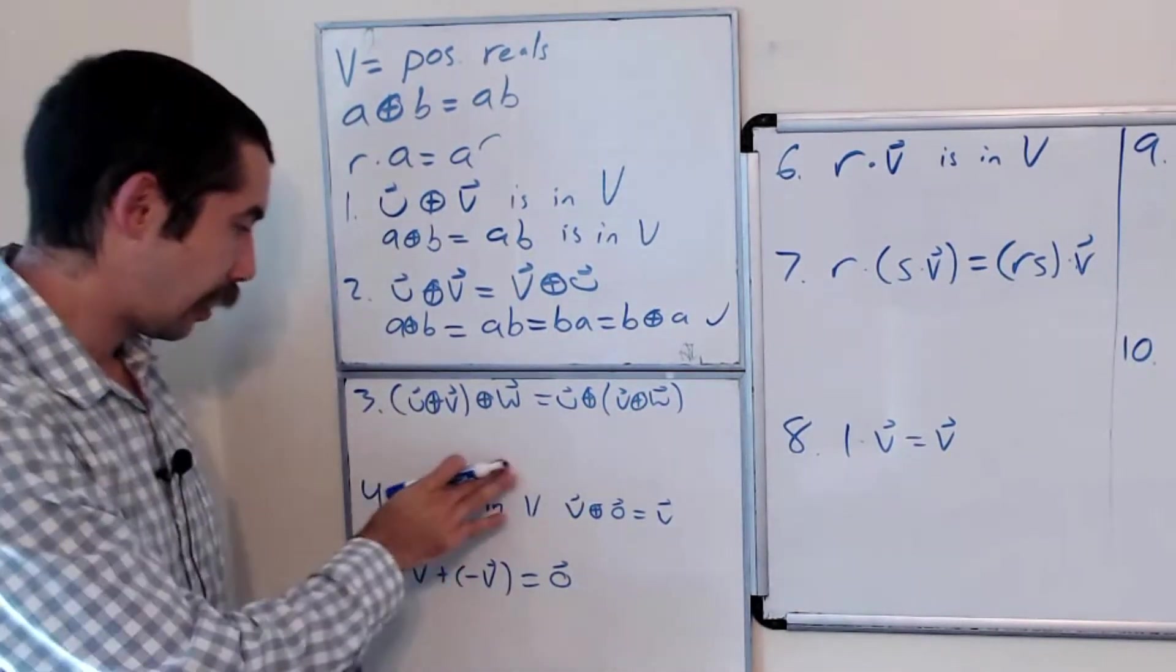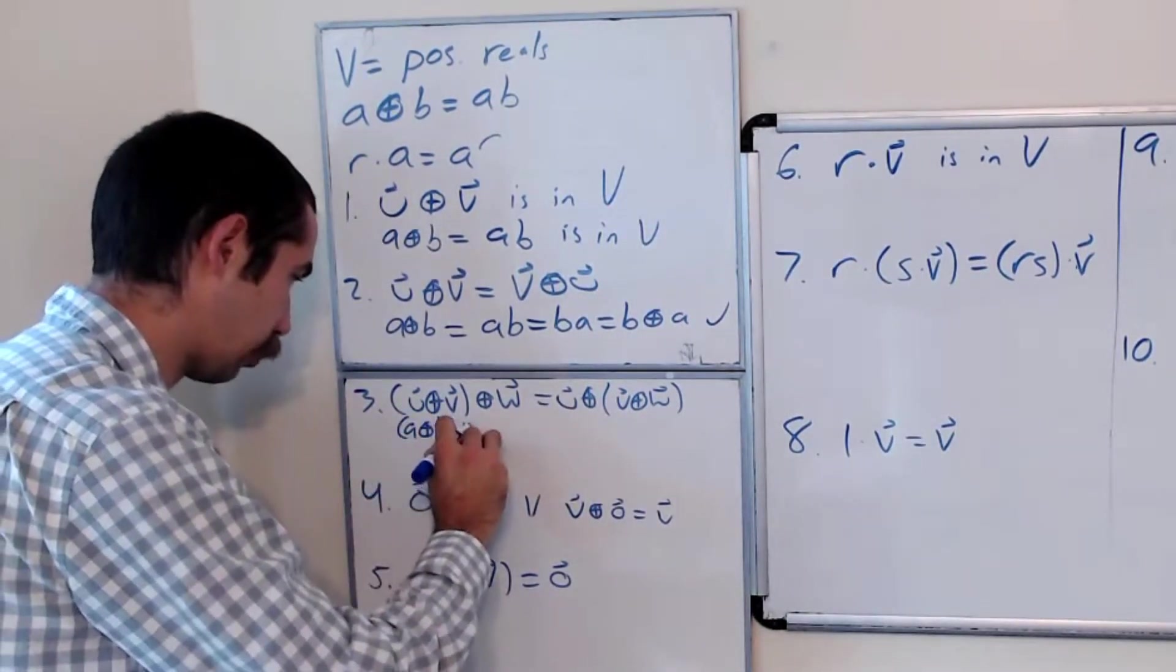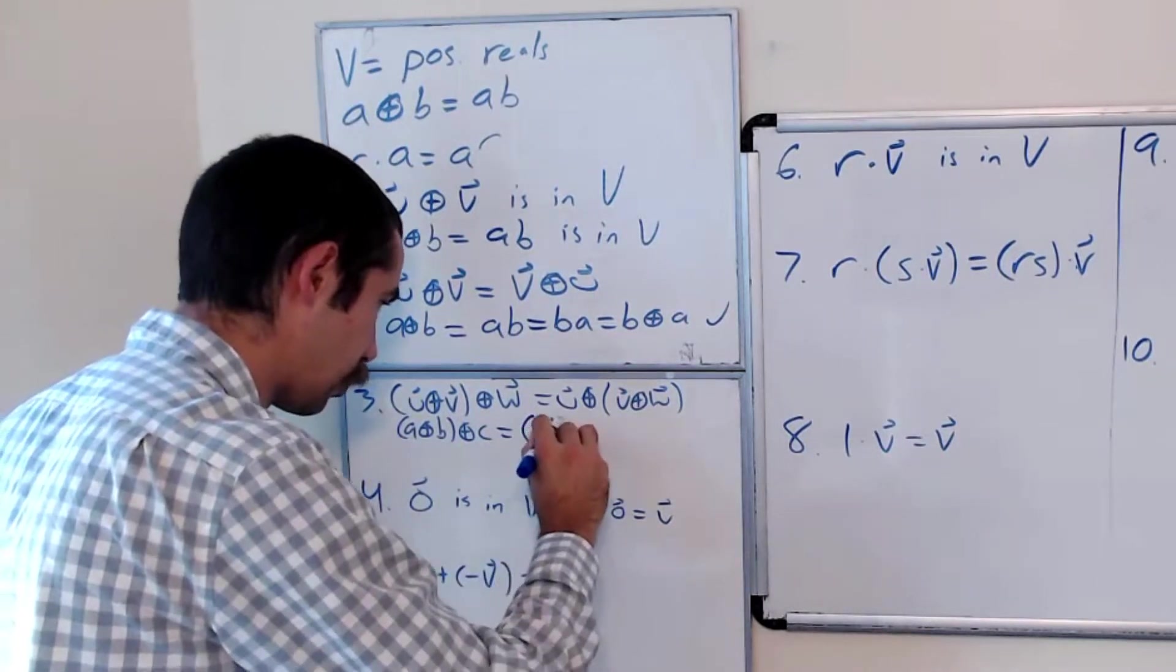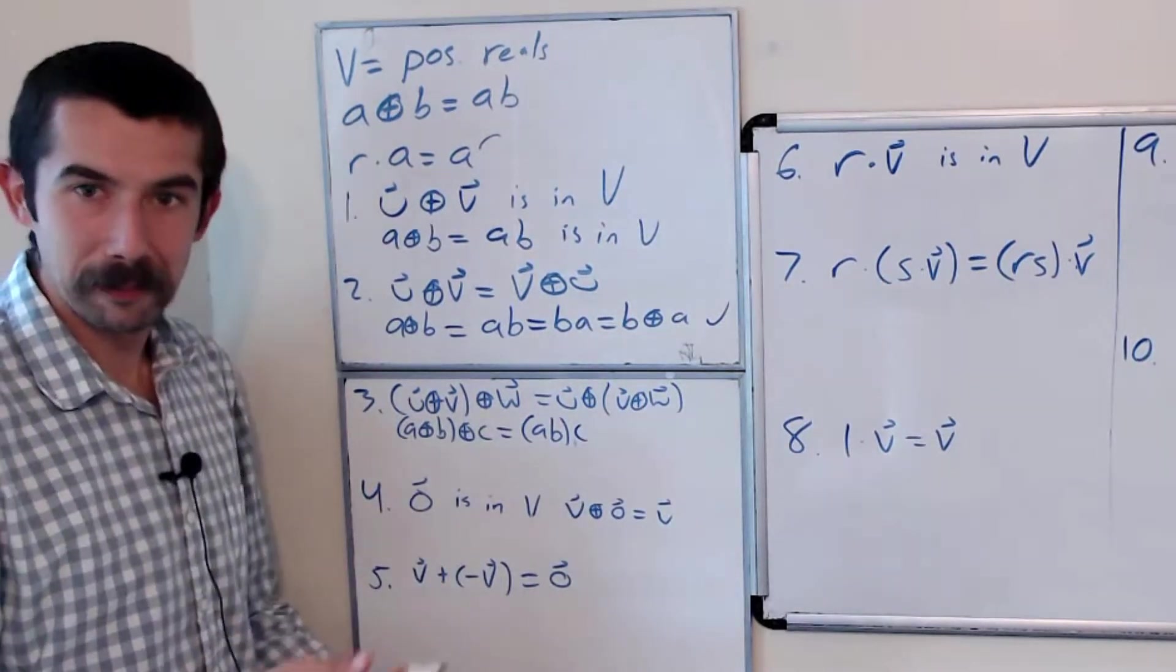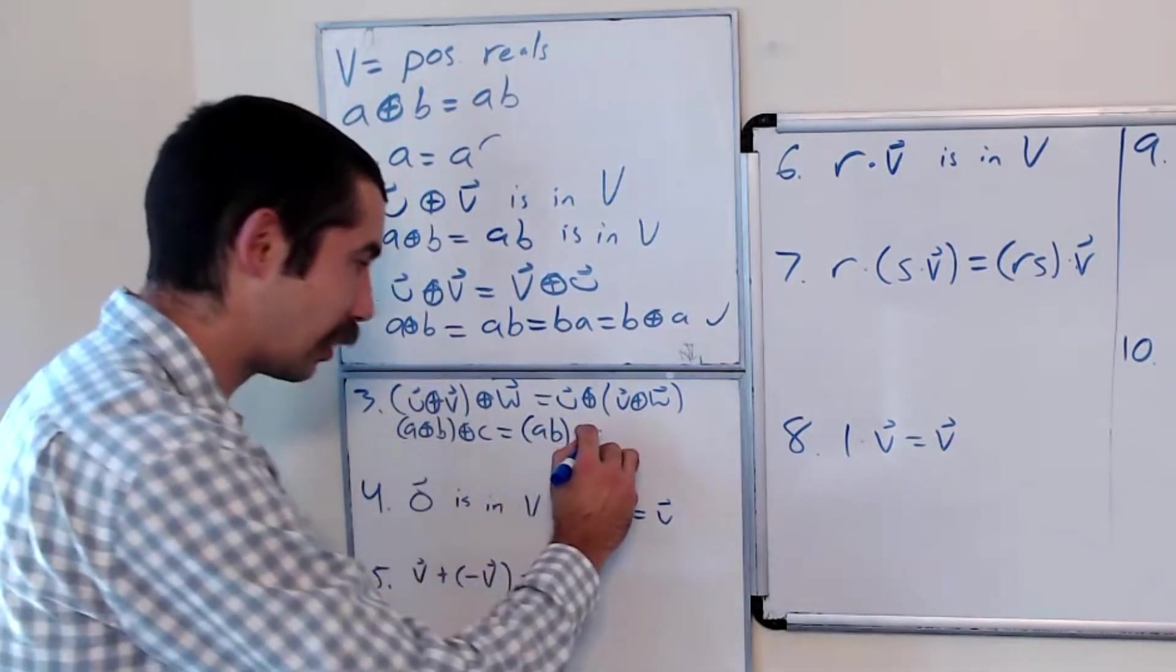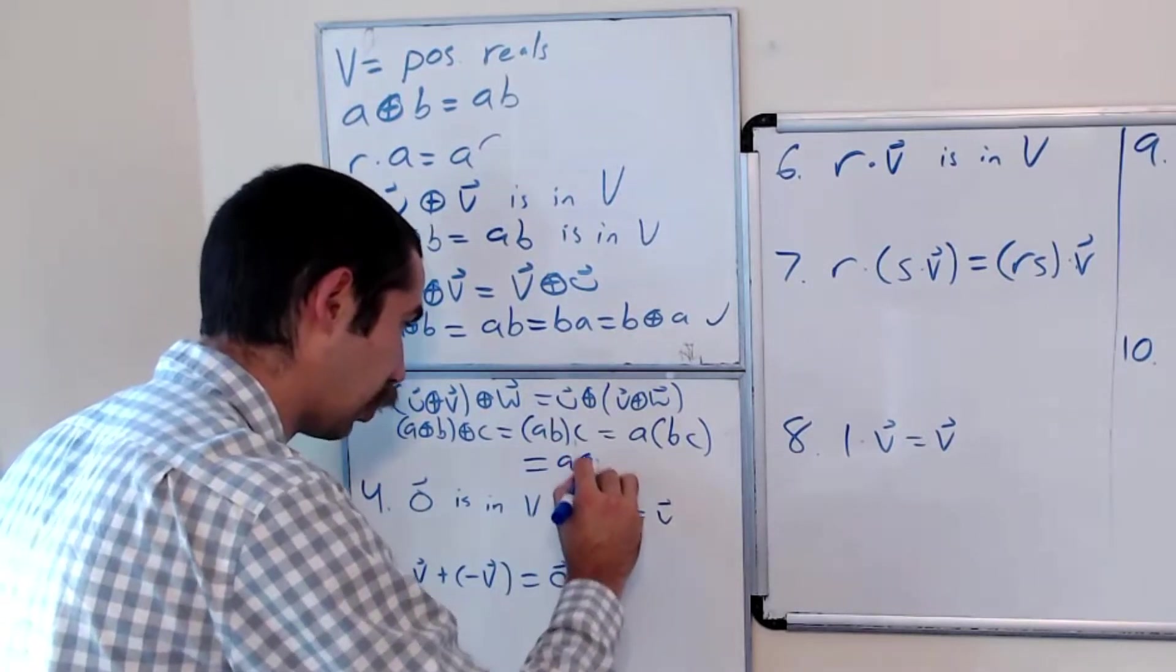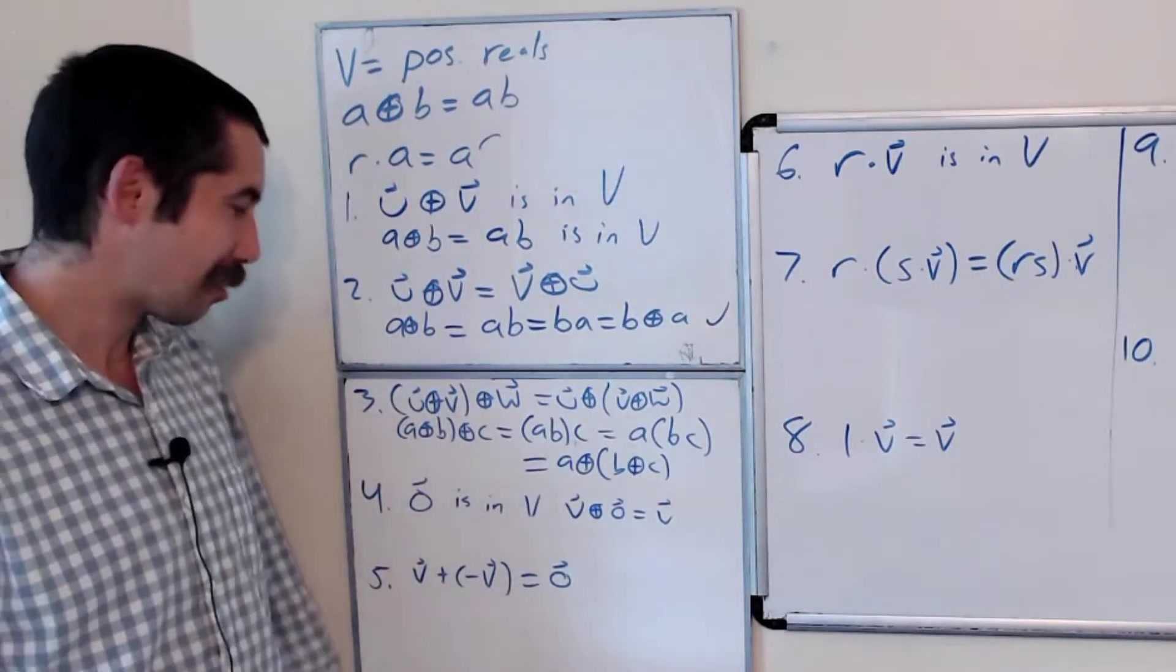Now let's look at condition three. Is it associative? So let's do (A⊕B)⊕C, which we know is A times B times C. But we know with real numbers, positive real numbers, it doesn't matter if we group these in a different order. So this is equal to A times BC, which is exactly equal to A⊕(B⊕C). So condition three holds.